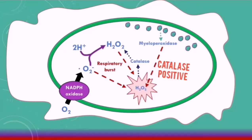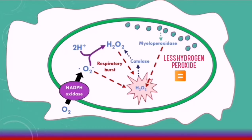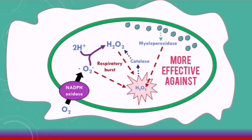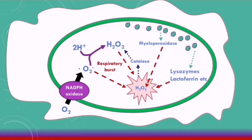Catalase positive organisms will have less hydrogen peroxide inside them, because their catalase enzymes break down the hydrogen peroxide they produce as a waste product. So there will be less substrate for myeloperoxidase to bind to, which is why myeloperoxidase enzymes are more effective against catalase negative organisms. The lysosomal granules also contain other enzymes such as lysozymes, lactoferrin, defensins, and hydrolytic enzymes, all of which can cause damage to pathogens and help the phagocyte destroy them.